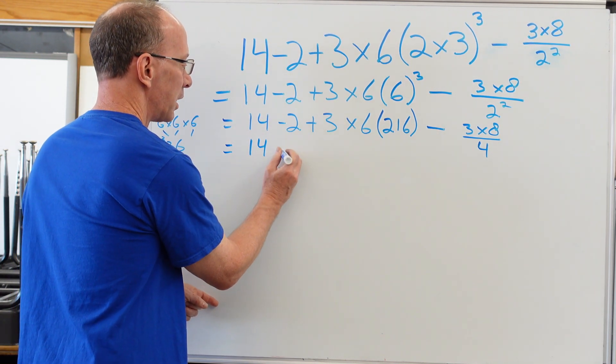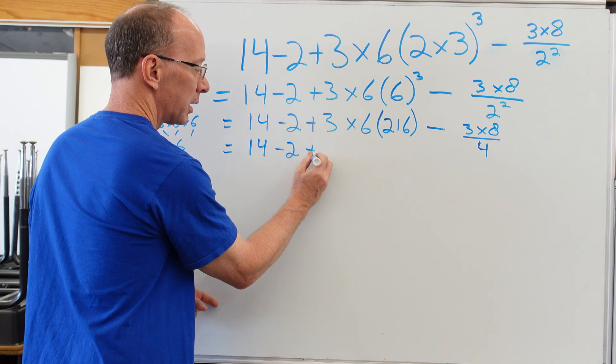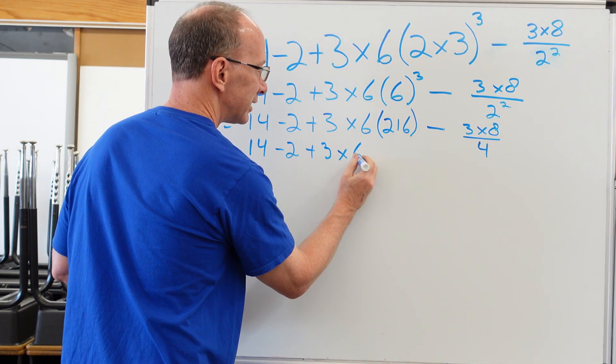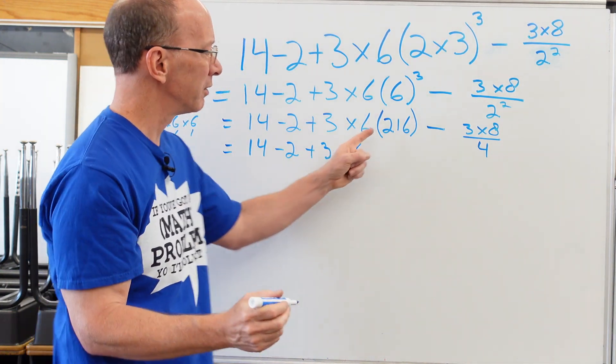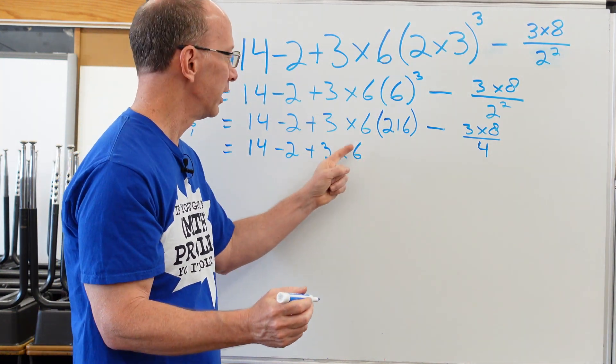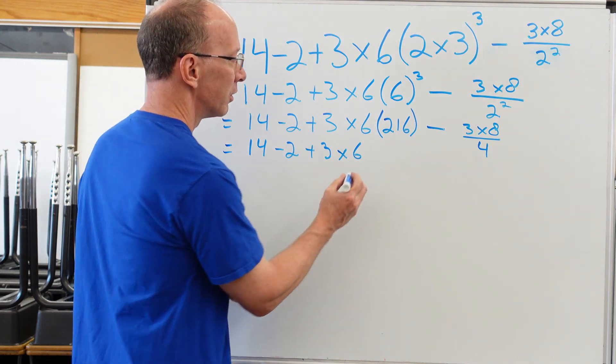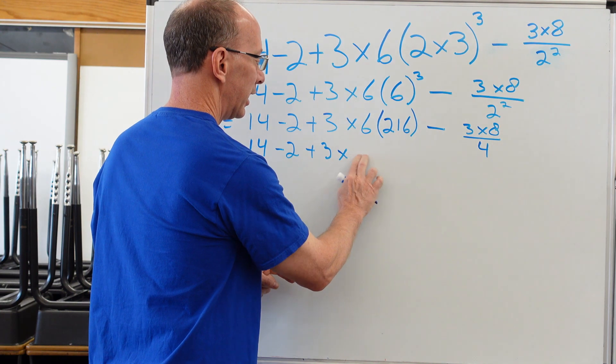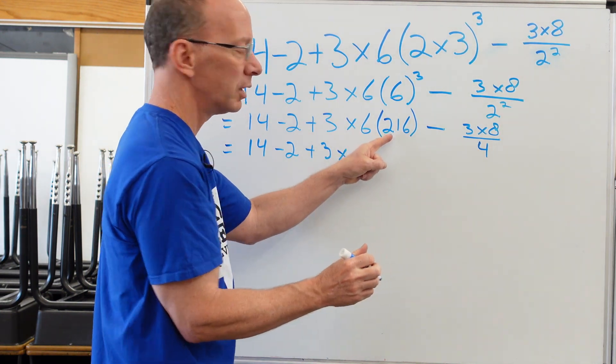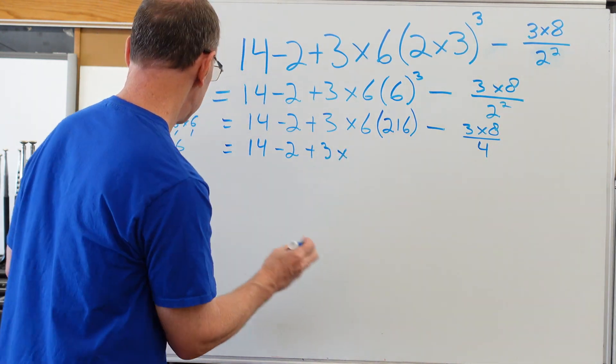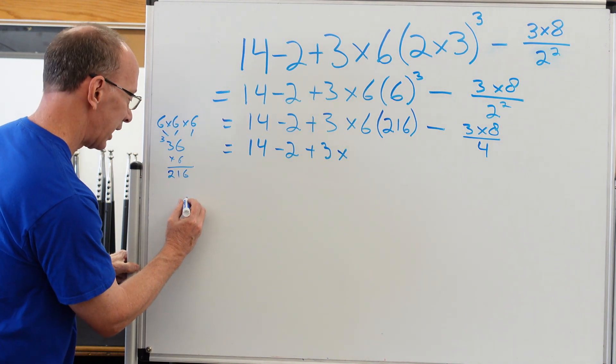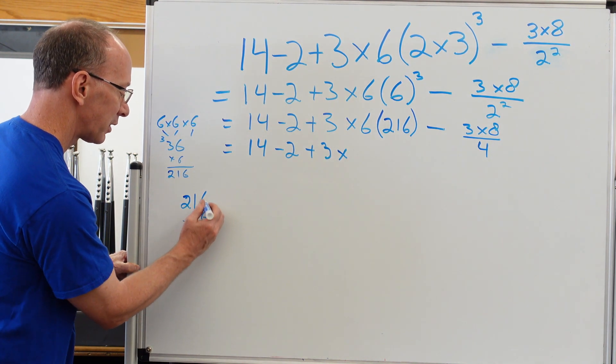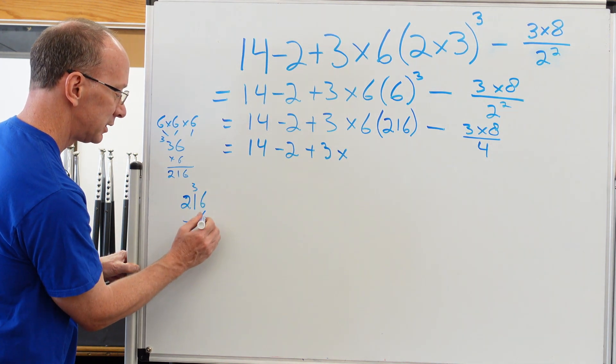So now let's begin again. So 14 minus two plus three times six. I want to do this one right here first. So this is going to be, I'm going to go ahead and erase that six right here. And I'm going to go ahead and do 216 times six. So again, we're going to do a little side calculation here. 216 times six, six times six is 36. Carry the three, six, seven, eight, nine.